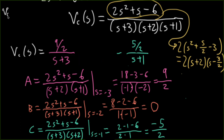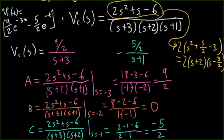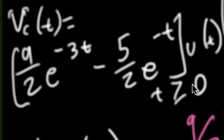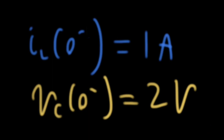So v_C(t) in the time domain equals (9/2)e^(−3t) − (5/2)e^(−t), valid for t ≥ 0 — usually written with a u(t). We're not saying v_C(t) was 0 for t < 0; we remain agnostic about the function before t=0. As a sanity check, plugging in t=0: 9/2 − 5/2 = 4/2 = 2, which matches our original initial condition.